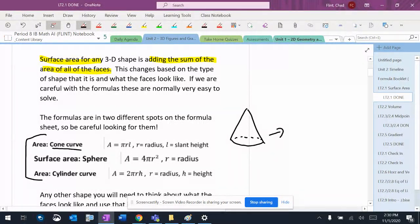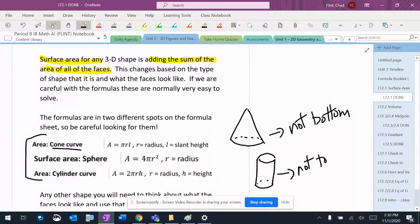So this cone curve means not the bottom. And it's the same thing with the cylinder. Cylinder has a top and the bottom, so it's not the top and the bottom.